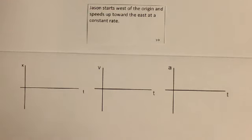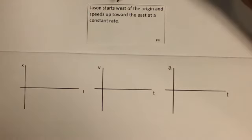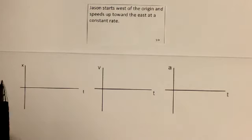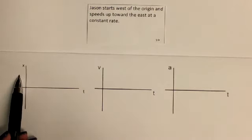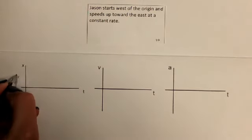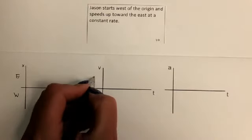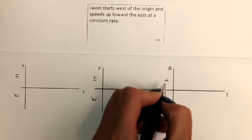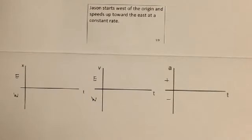For our first scenario: Jason starts west of the origin and speeds up toward the east at a constant rate. Let's say east is positive and west is negative. We either have a positive or negative acceleration. Pause your video, read the scenario, and then make your answer.